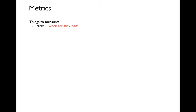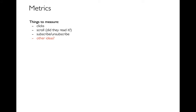There are lots of things you can measure. I've been giving the example of clicks. When would clicks be bad? Maybe I'm clicking on the site and interacting with it, but I'm clicking things like 'unsubscribe.' If I have some sort of newsfeed, maybe I'm not clicking anything, but am I scrolling through and reading it? Am I subscribing or unsubscribing? Just take a moment and write a couple down on a piece of paper.